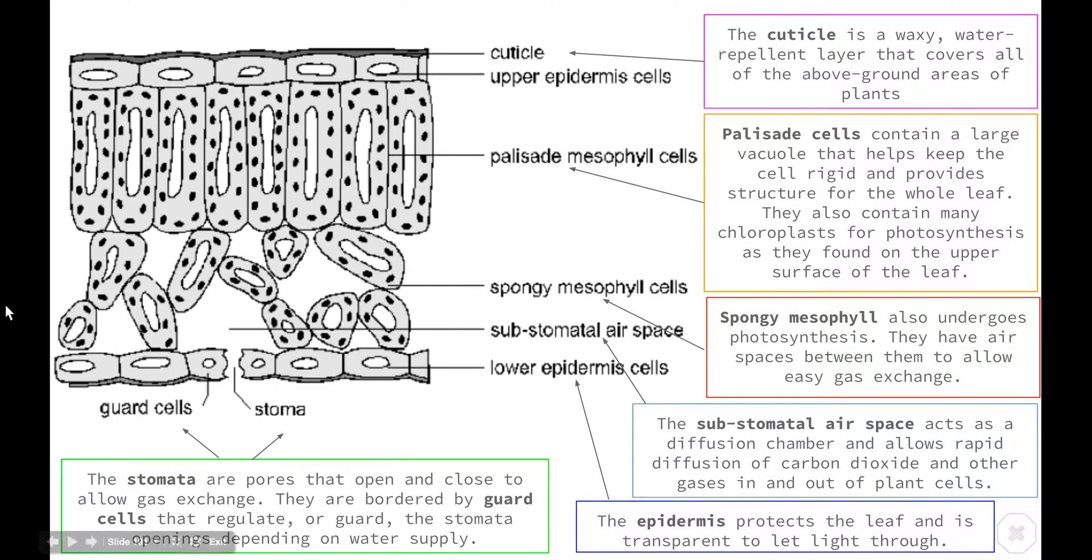And lastly we have the stomata. The stomata is actually an opening in the surface of the leaf that opens and closes to allow gas exchange. On either side of the stomata are guard cells which help to regulate, or guard, hence their name, the stomata opening depending on water supply. When there's lots of water in the plant, the guard cells pull apart from one another and allow gas exchange to take place freely. However, when the plant doesn't have much water, the guard cells become limp and flaccid and they push into one another and close the stomata opening.